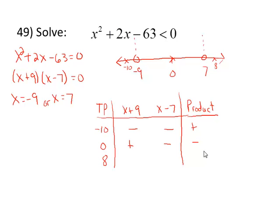Plug in 0: 0 + 9 is positive. 0 - 7 is negative, so that product, positive times negative is negative. Finally, plug in the 8: 8 + 9 and 8 - 7 are both positive. When we multiply two positive values, the result is positive.